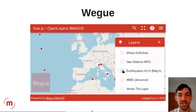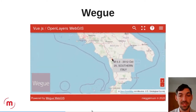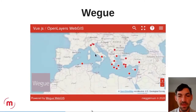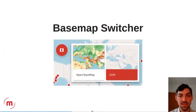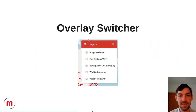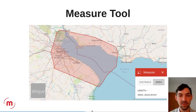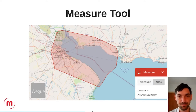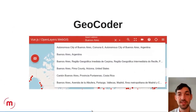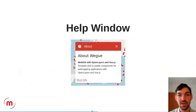WECU has some basic features you can activate. There is a base map switcher — you define which layers are base maps in the configuration file and they show up in the switcher. There is an overlay switcher to toggle overlays on and off. There is a measure tool for area and distance. A geocoder component is included since it is needed very often. All of these can be activated with one setting in the configuration file.